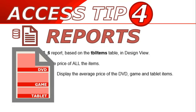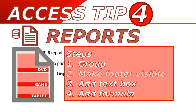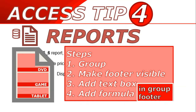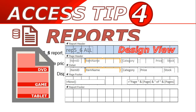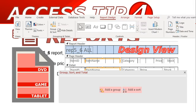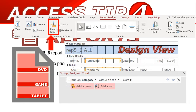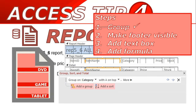If you want a report based on each category, the steps are the same but with two extra steps: first group the data, then make the footer visible. At the bottom of your page you'll see Group, Sort and Total. If you can't see it, go to the ribbon under Report Design and click Group and Sort. Click Add a Group and group it by category for DVD, game, and tablet. Once done, you've completed the first step — grouping the report.